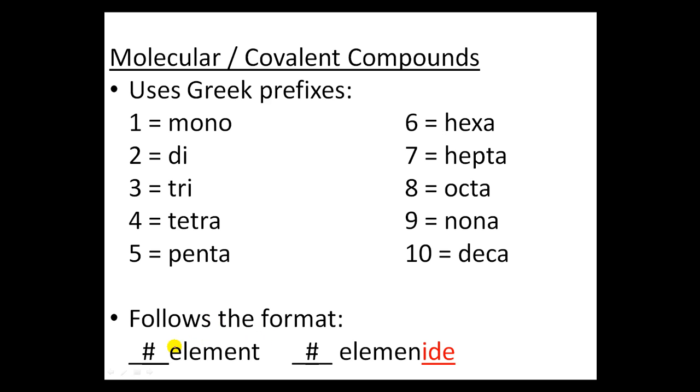In terms of the format, it follows this one where you have the prefix. So if my first element has four, then I have to say tetra and put the tetra in here. Then I look at my second element. Again, you change it to -ide, so it must change its name. The second element gets whatever its number is. So if there were eight of that element, then you would say octa element-ide.